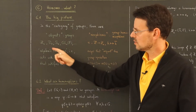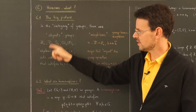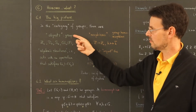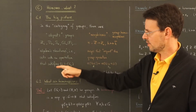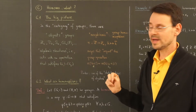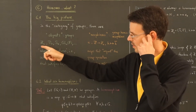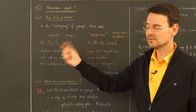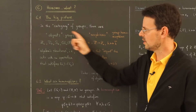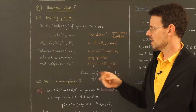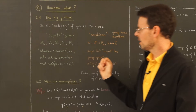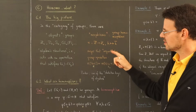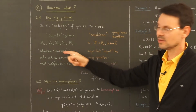Here we have a so-called algebraic structure, meaning we have a set together with an operation, and in the category of groups the operation satisfies the three group axioms. For example, the operation is addition of residue classes, or composition of symmetries, or composition of permutations, or matrix multiplication. A morphism must in some sense respect this structure — the operation on this structure.